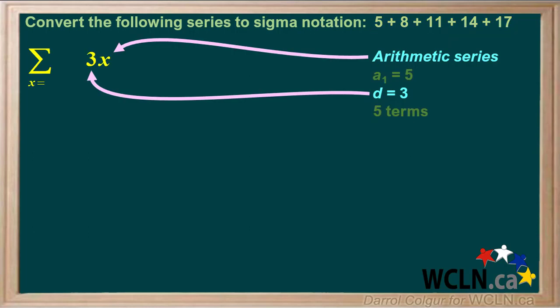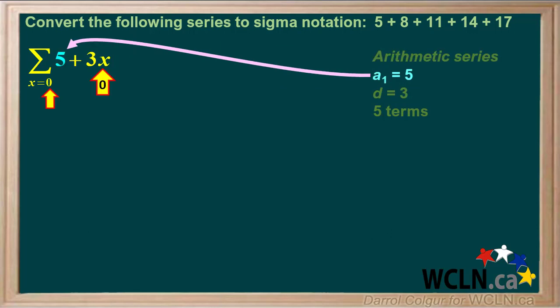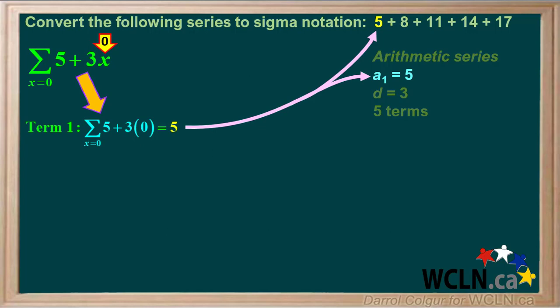Because this is an arithmetic series, we know that the function will contain a term in which d is multiplied by a variable, which we'll call x in this case. If we set x as 0 for the first term and add 5, we get 5 plus 3 times 0, which is equal to 5 for the first term.